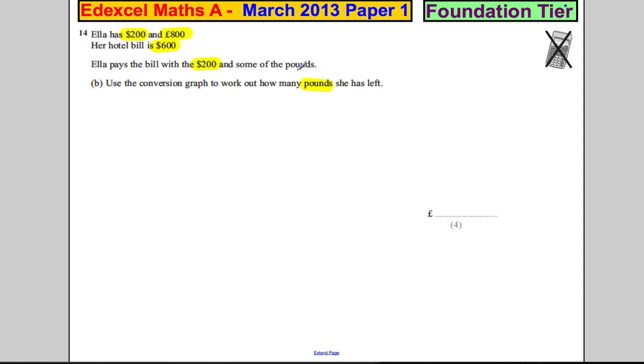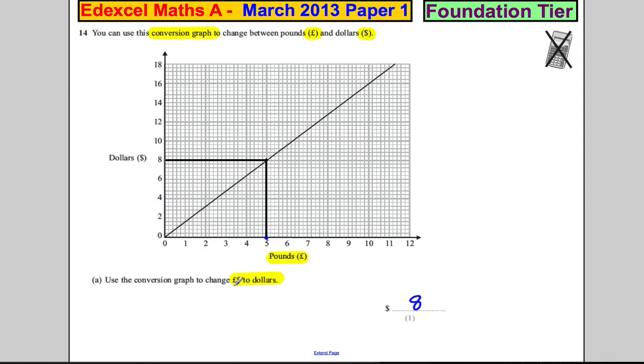Let's write down some of the information. She pays the hotel bill with 200 dollars and some of the pounds. The hotel bill is 600 dollars, so 600 dollars subtract the 200 dollars she pays is 400 dollars, and that's how much she owes with her pounds.